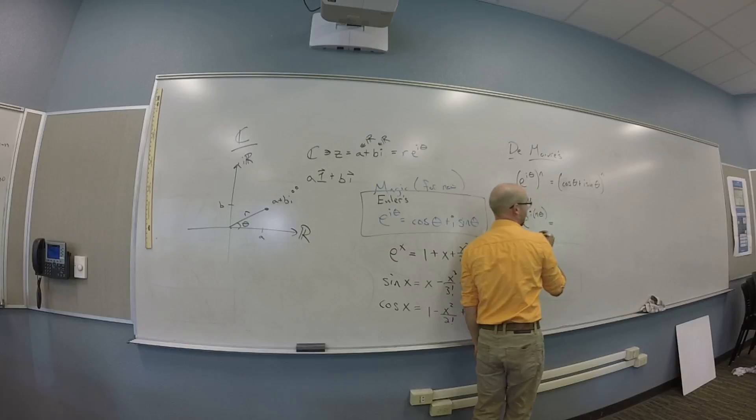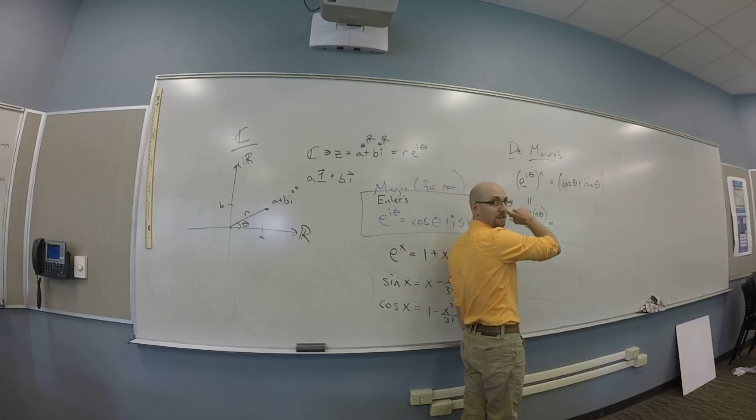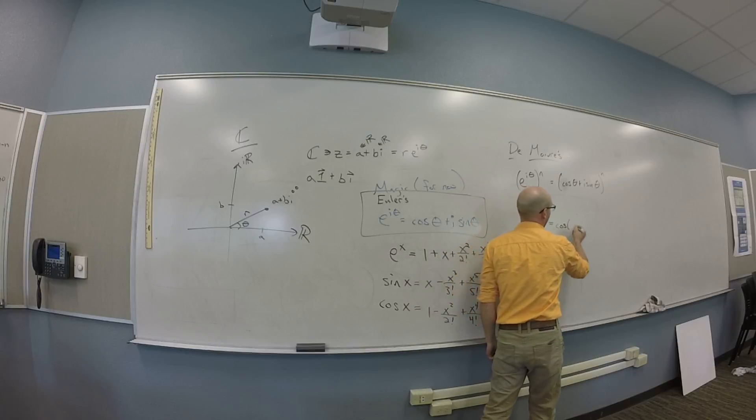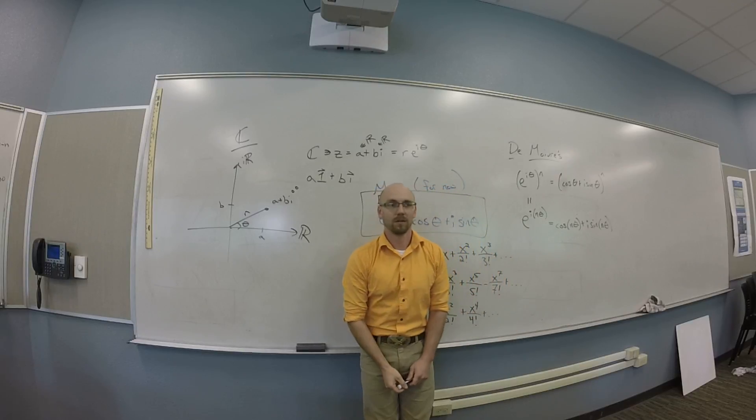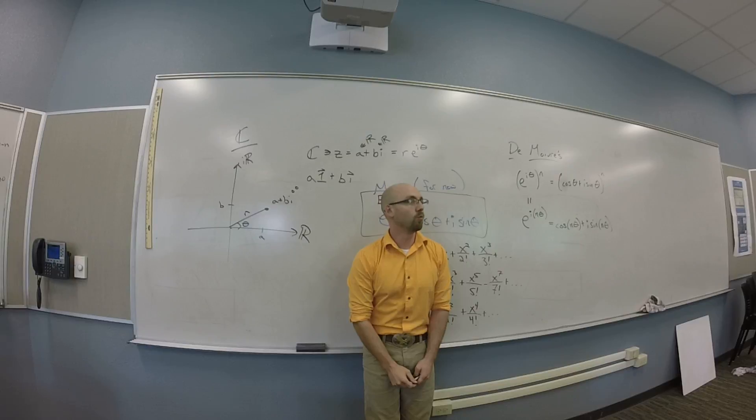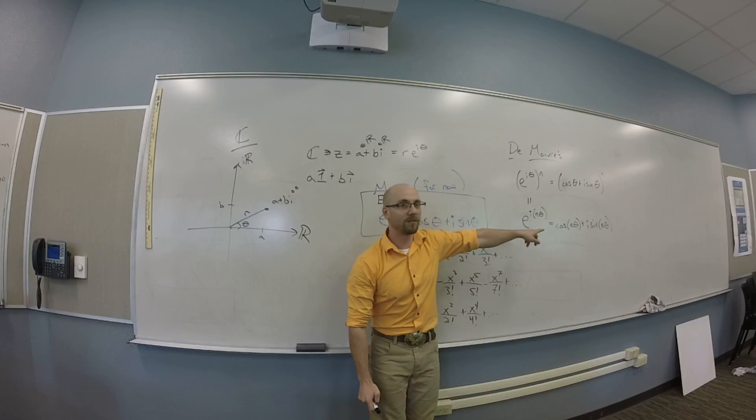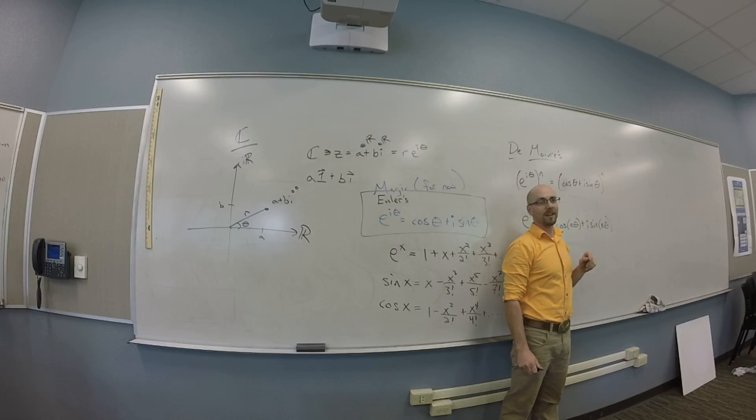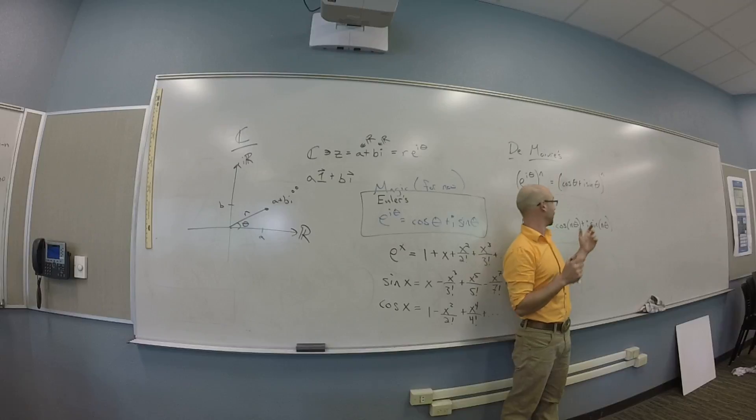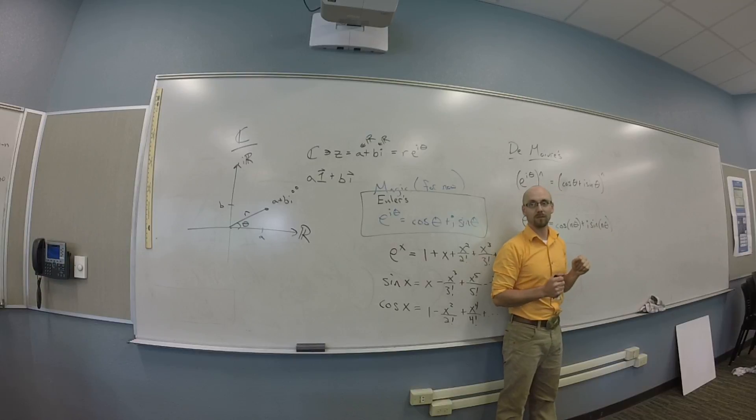Okay. And that means that I can plug n theta into Euler's, right, and get cosine of n theta plus I sine of n theta. And if you want to know what sine of n theta is, or what cosine of n theta is, you can boil this thing out. It's going to be a little worse than boiling, right? There might be like 27 of them. And then you can gather up the real parts. The real parts are going to have to be the cosine of n theta. And you can gather up the imaginary parts. Those will be the sine of n theta. That's cool with us?